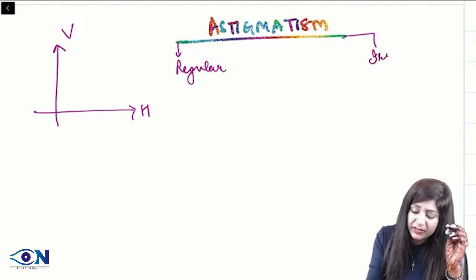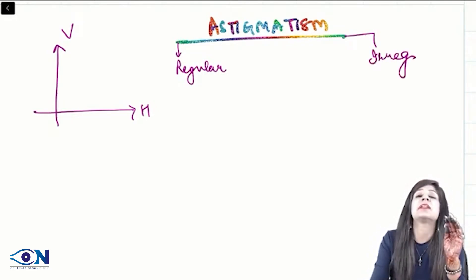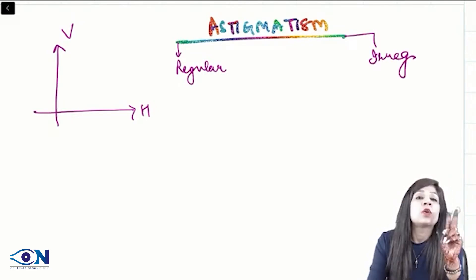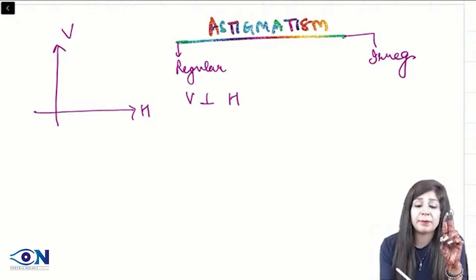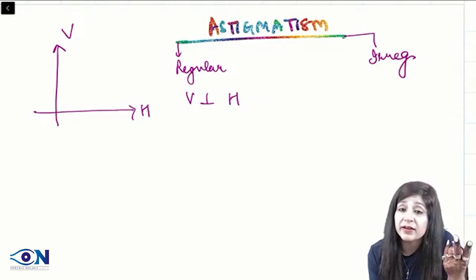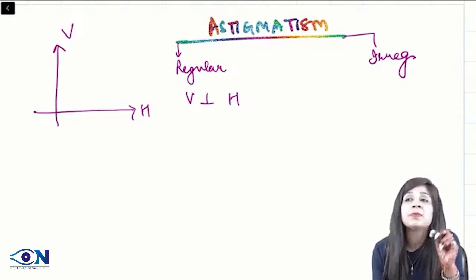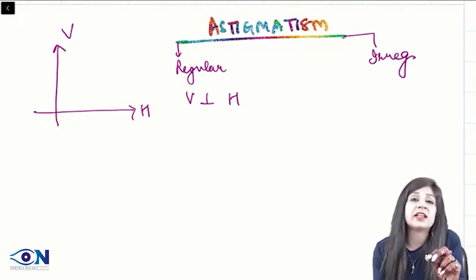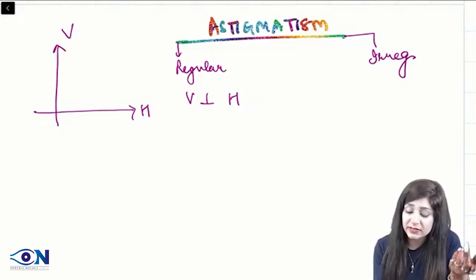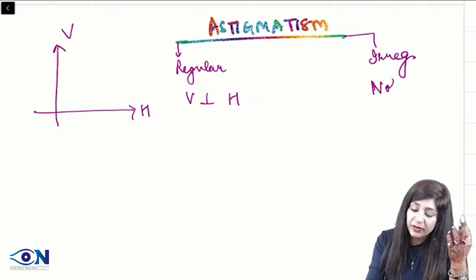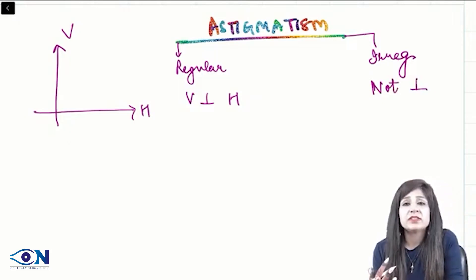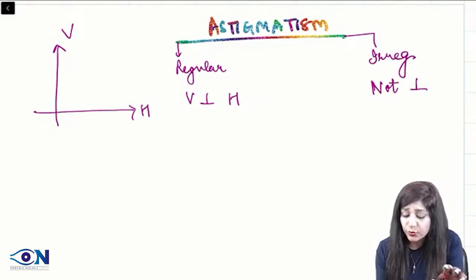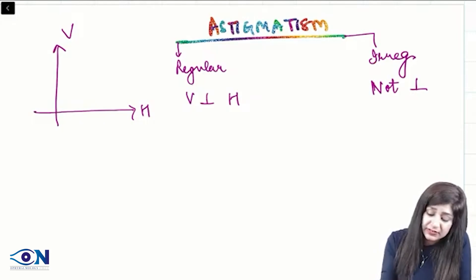Astigmatism can be regular or irregular. In our scope, it is mainly regular astigmatism, where the two meridians — vertical and horizontal — are perpendicular to each other. If both meridians are perpendicular with an angle of 90 degrees, I call it regular astigmatism. If they are not perpendicular, then it is irregular astigmatism.